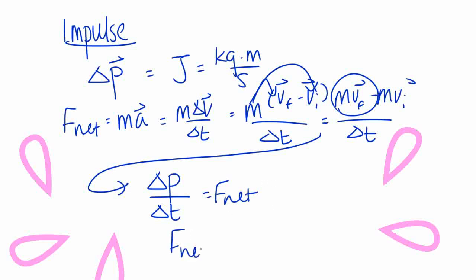And if we rearrange this, we can get F net delta t equals change in momentum, which is impulse. That is impulse right here. So let's look at a few scenarios where impulse is talked about regularly on AP Physics 1.